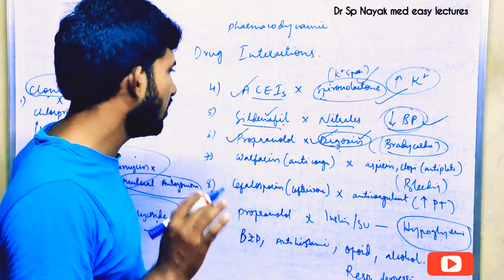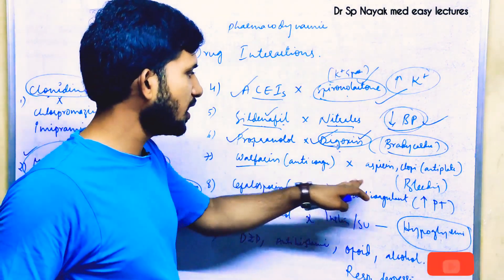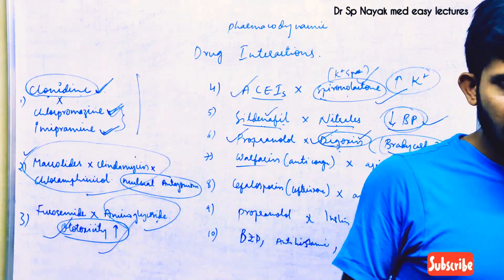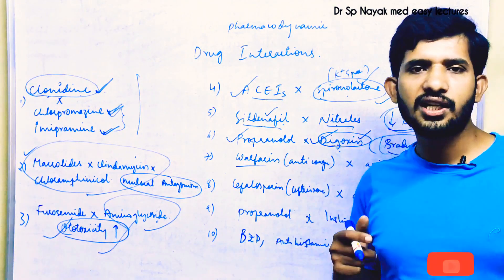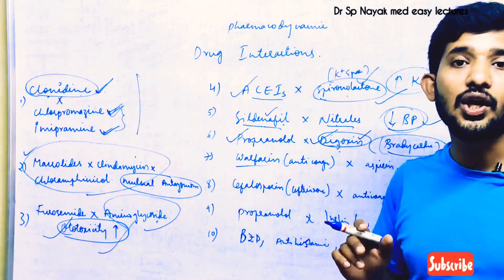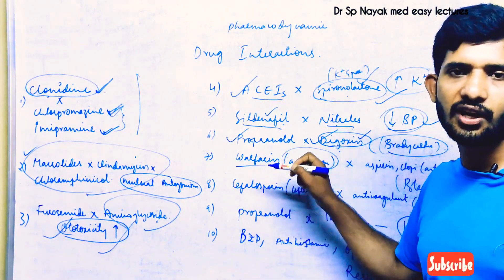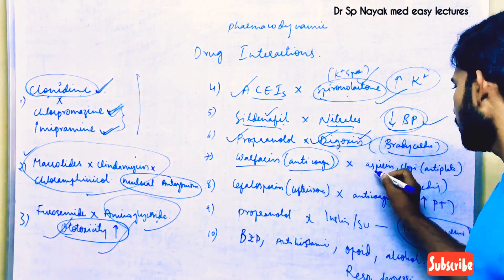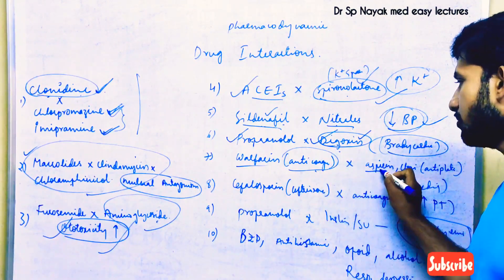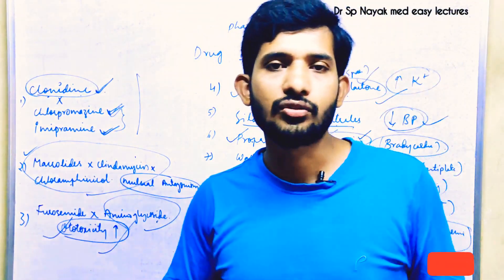The next interaction is anticoagulants combined with antiplatelet drugs. In most cases this combination is used when strong anticoagulation is specifically required, but in normal patients, never combine anticoagulants such as warfarin or coumarin with antiplatelet drugs such as aspirin or clopidogrel, because these two drug classes together will increase the risk of bleeding.